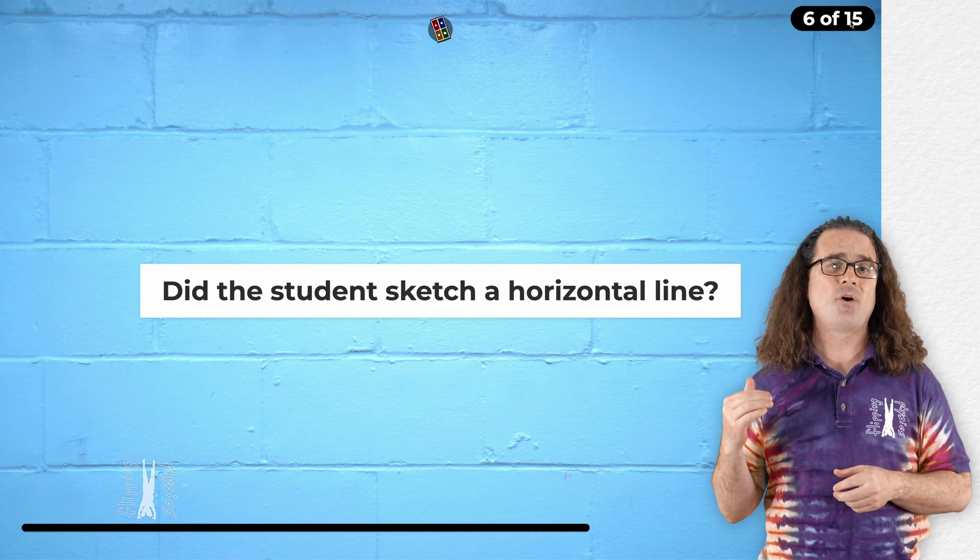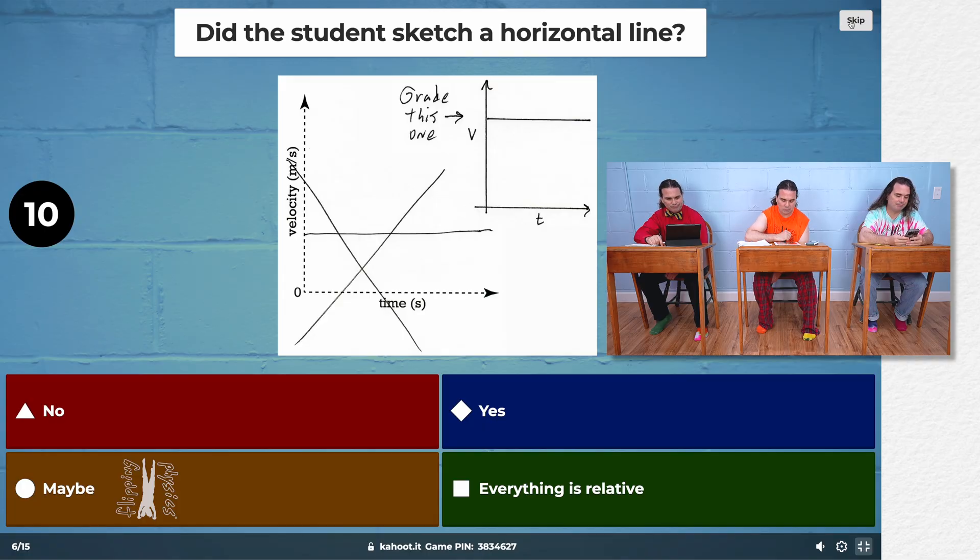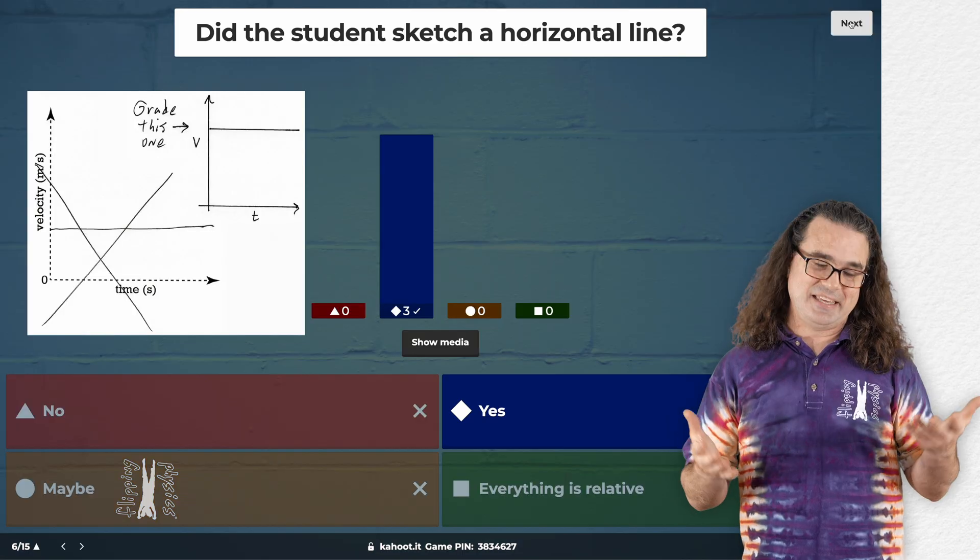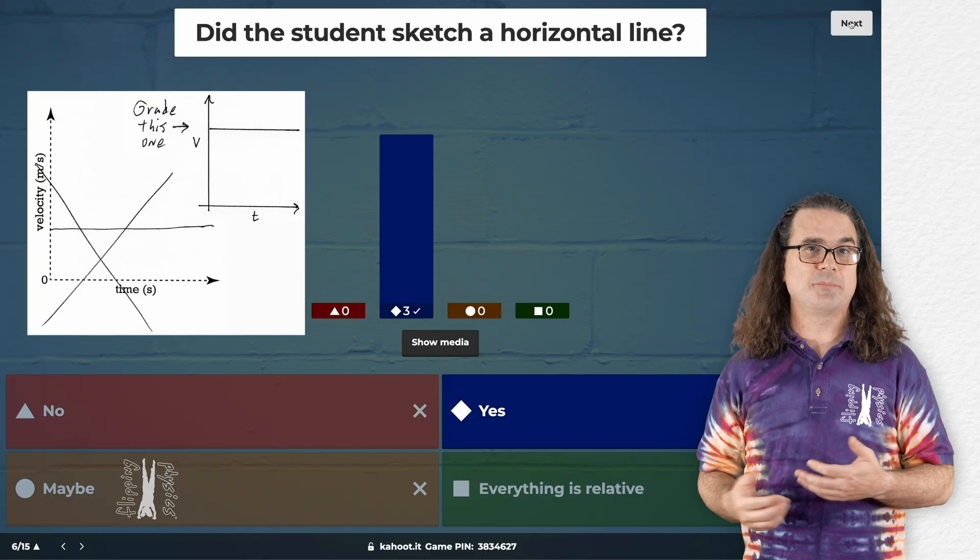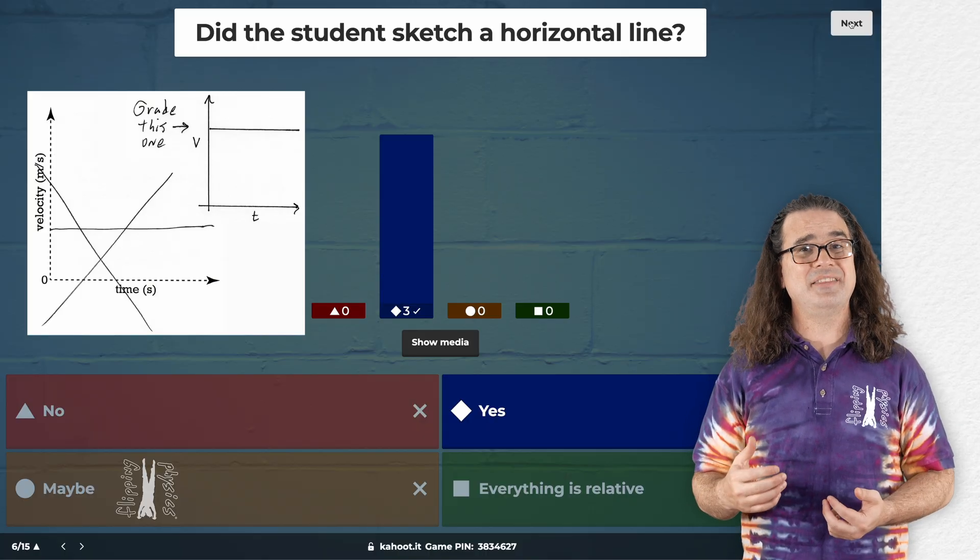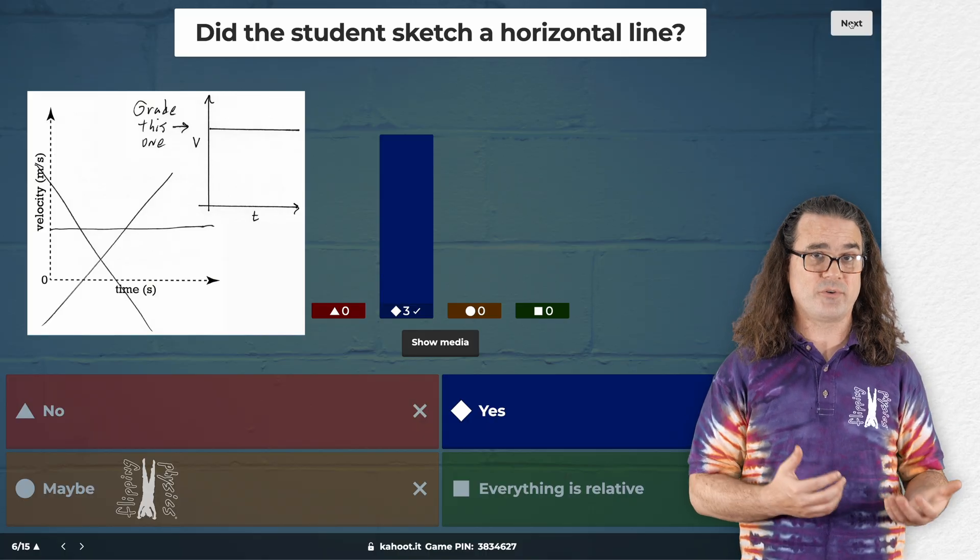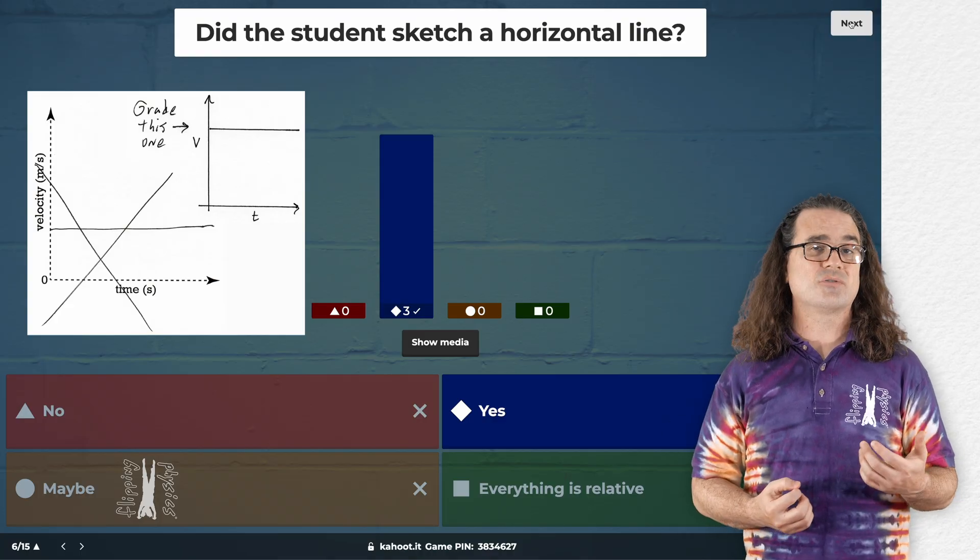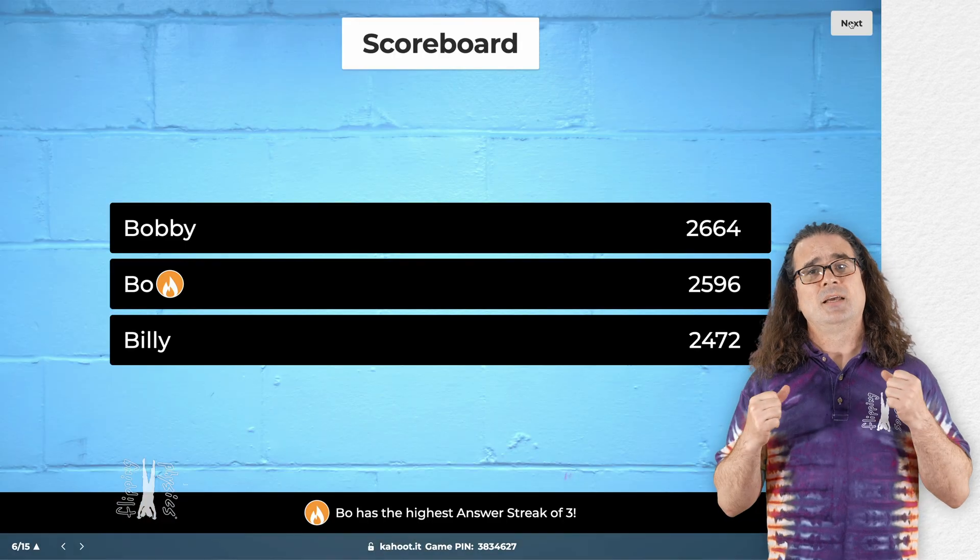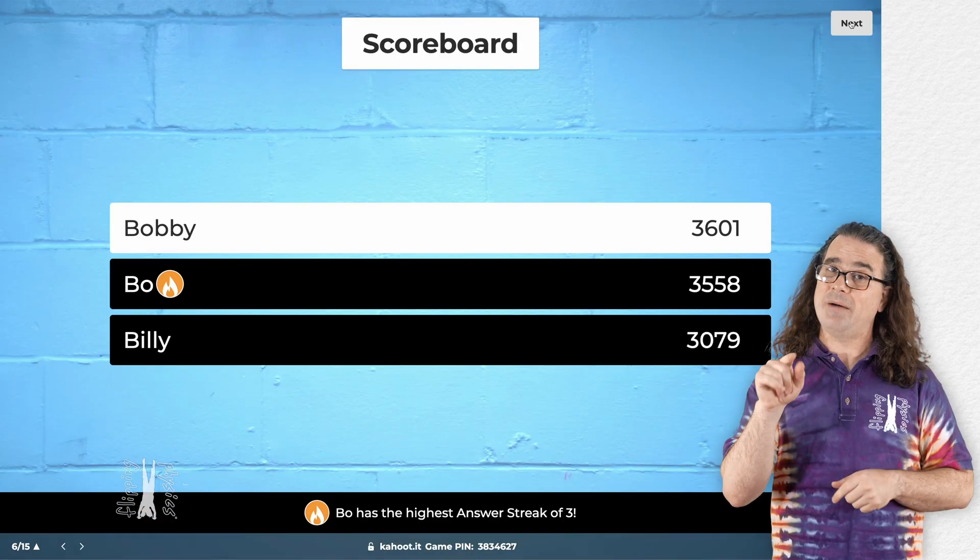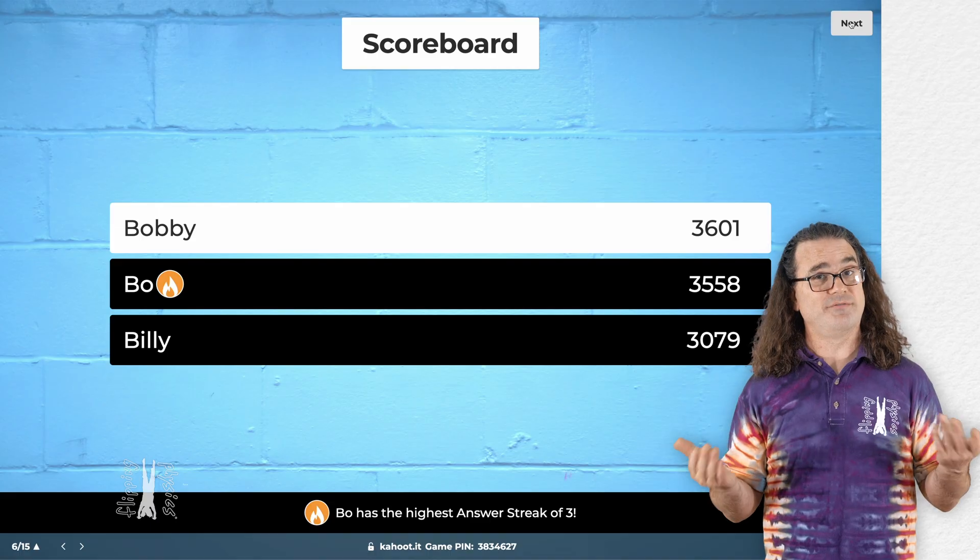They just crossed it off. If you cross something off, the graders cannot grade it. Exactly. However, the college board does call us readers and not graders. Sure. Yeah. I cannot tell you how many times I was unable to grade a correct solution just because a student crossed it out. So please be careful crossing stuff out on the AP exam.